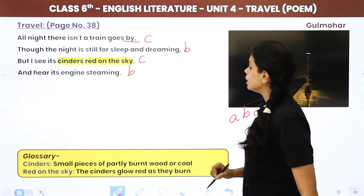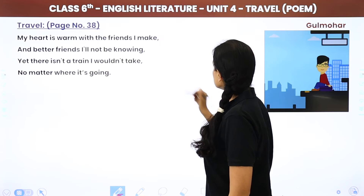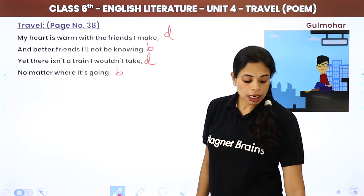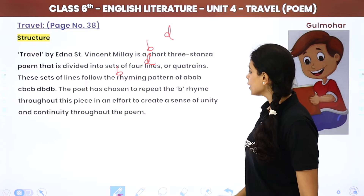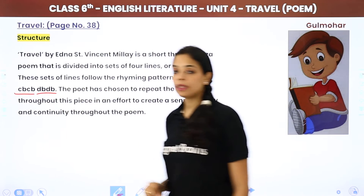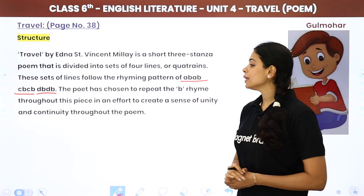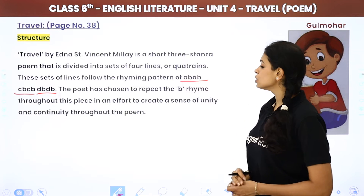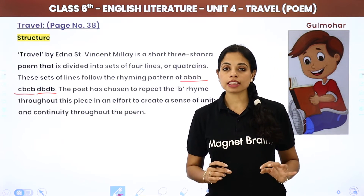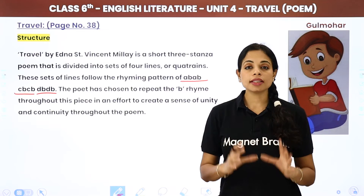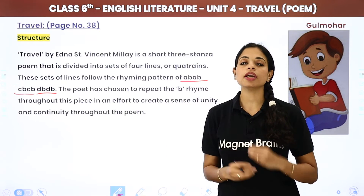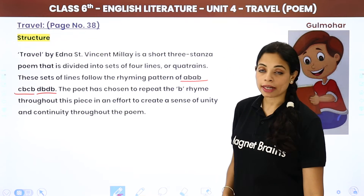The complete rhyming scheme is A, B, A, B, C, B, C, B, D, B, D, B. The poet has chosen to repeat the B rhyme throughout all three stanzas in an effort to create a sense of unity and continuity throughout the poem. The second and fourth lines of every stanza share the same rhyming sound, giving the poem a consistent flow.